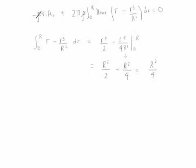Let's substitute this solution of the integral into this part over here. This becomes -v₁A₁ + 2π times R²/4 times the velocity u_max, and this is still equal to 0.